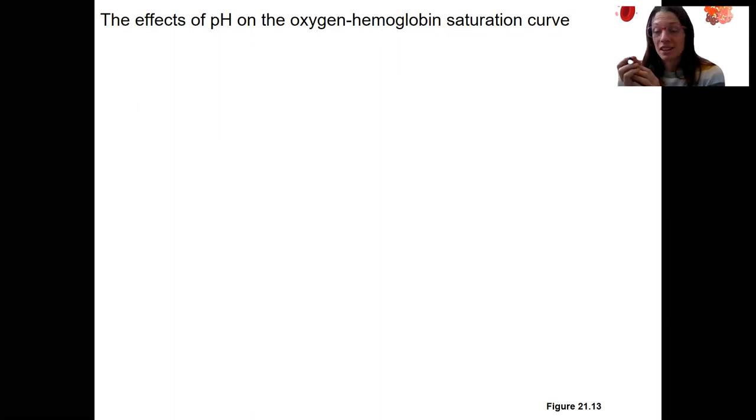So we have other things that can alter protein structure slightly. One of those is pH that can alter affinity, which is binding, binding affinity. So PO2 is the biggest thing, right? That's one of the variables in this curve, it's the one that's the x-axis.